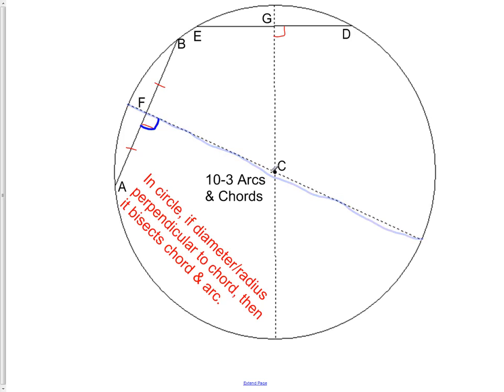Whenever the radius or the diameter is at a right angle to the chord, it means it cuts it into two equal pieces, and it also cuts it into two congruent arcs. The arc AF and the arc BF would be congruent, just like the segment from A to the intersection point is congruent to segment B.